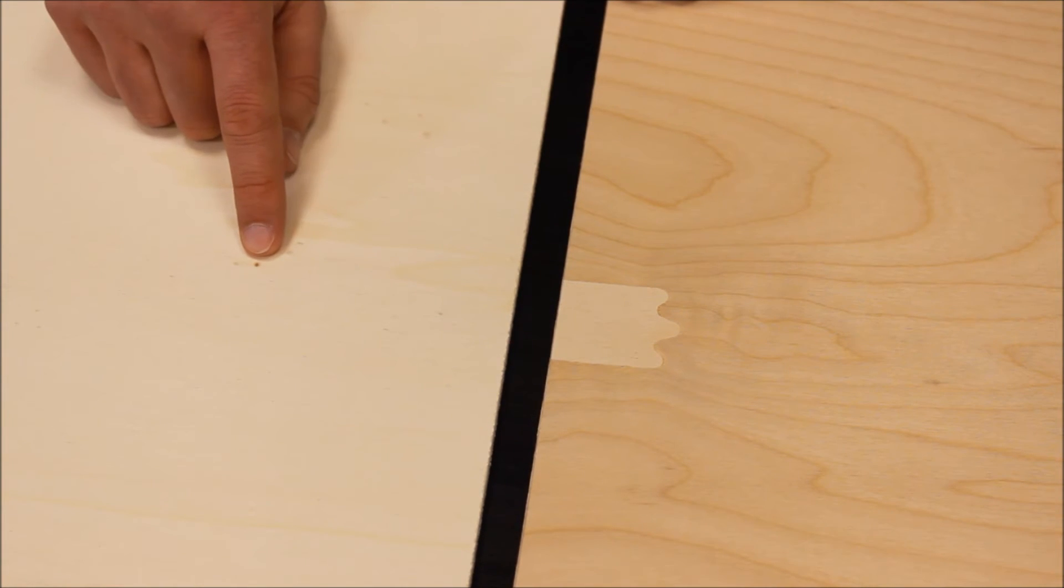You can see here there's a very small pin knot. The AB grading means there's a maximum size to which these knots can be. Very, very small.